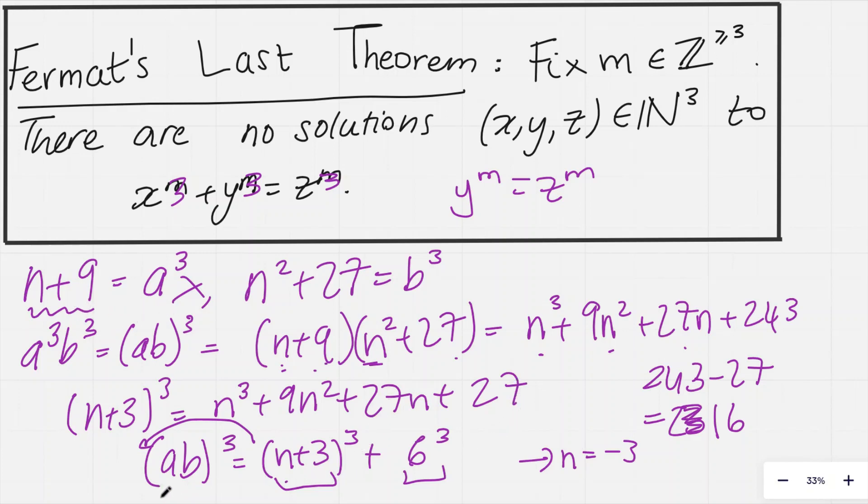And what about if a b is 0? Well, remember, a b is just the cube root of n plus 9 and the cube root of n squared plus 27. So, we need that either a or b is 0. If b is 0, that means n squared plus 27 is 0, and that's definitely not possible, because n squared has to be at least 0, and therefore n squared plus 27 is at least 27.